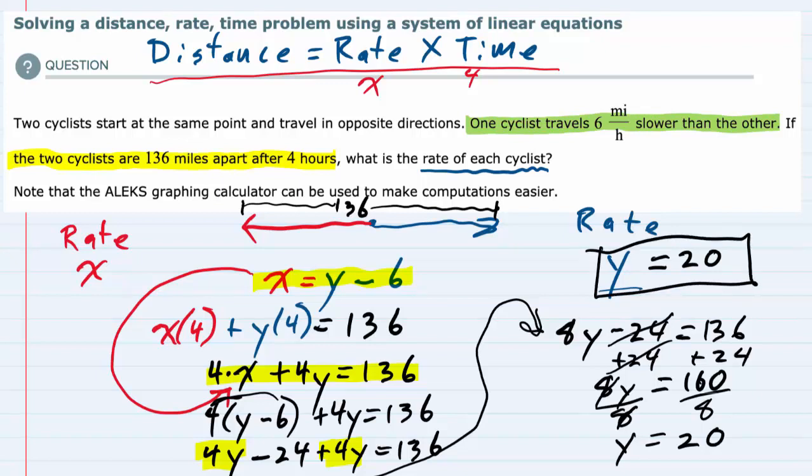The other cyclist, we said their rate is x. And from this equation, we see that x is equal to y minus 6. Well, if y is 20, then x would be 20 minus 6, or 14.